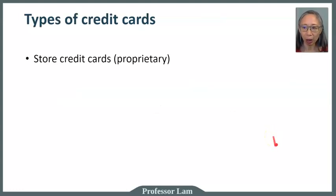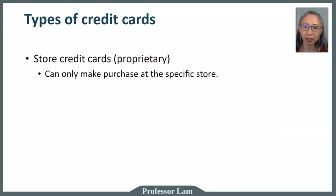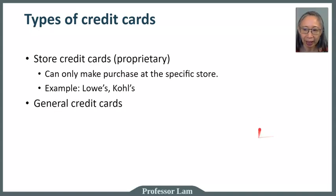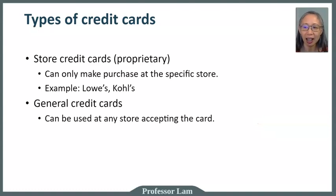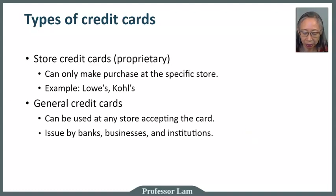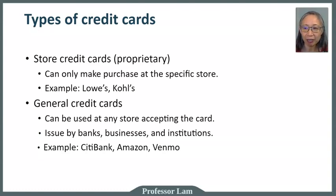There are two main types of credit card. The first type is tied to a specific store, so you can only make purchases at that specific store. Department stores are very famous for their credit cards — for example, Lowe's card, Target card, or Costco card. And then there are general credit cards, which can be used at any store or any restaurant. They are issued by banks and also by businesses such as Amazon, and institutions. Examples include Citibank card, Amazon card, or even Venmo — they have their own credit card. There are a lot of them and they are pretty common.